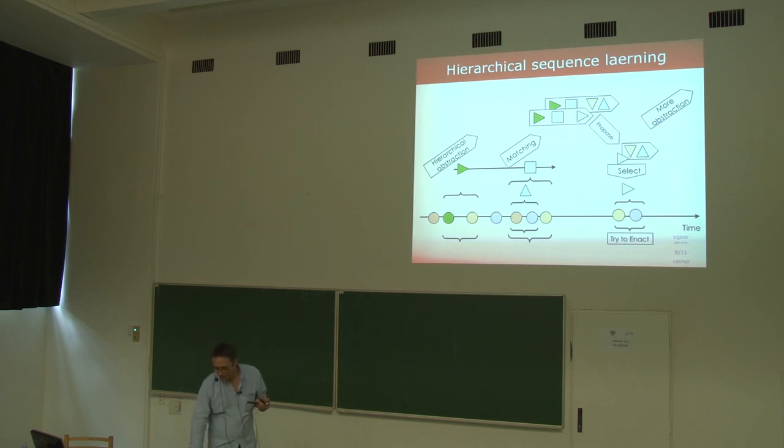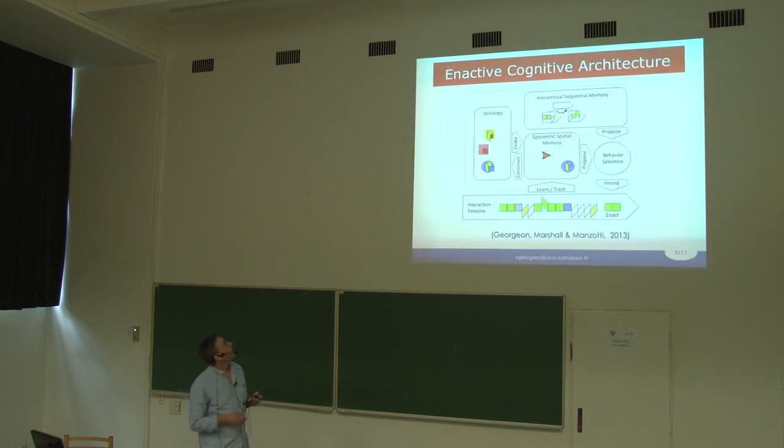If it goes well, it can learn higher level sequences. I think this algorithm has some connection with Brett Martinson's algorithm that he presented on Wednesday. From that we designed the cognitive architecture where there is this hierarchy called sequence learning mechanism from the interaction timeline. But there is also a spatial memory in which we can place the events of interaction in space, here in the egocentric memory of the agent. Because the problem is not only to learn patterns in time, but also patterns in space.